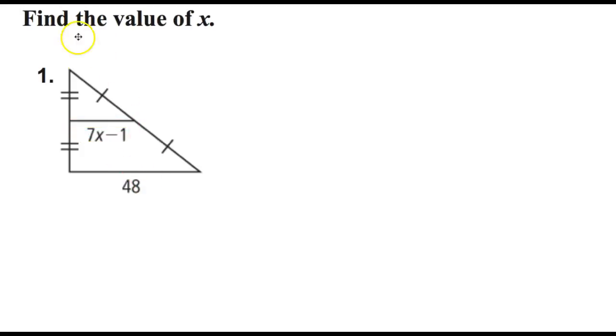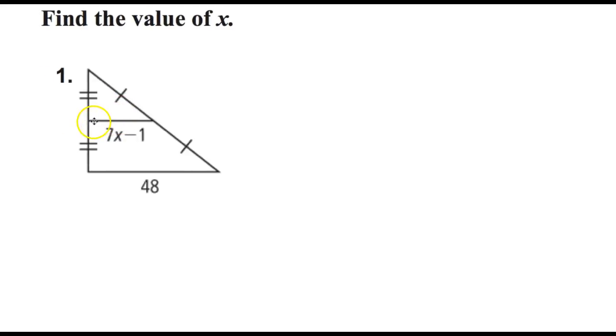But for this problem, we're going to use one of the facts that we know about mid-segments: they're exactly half as long as the side across from it. So this 7x minus 1, if you were to double it, you'd get the value of 48 over here. There's a couple of ways you can set up this equation.